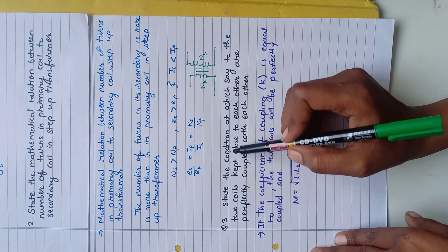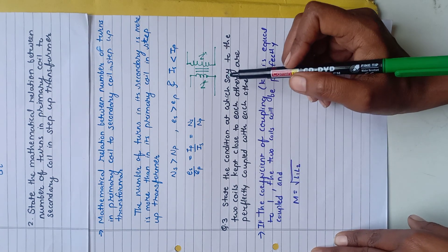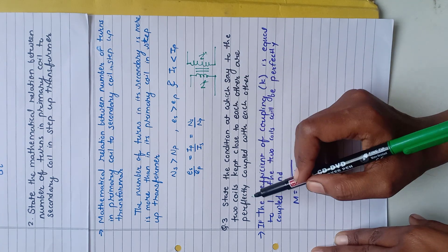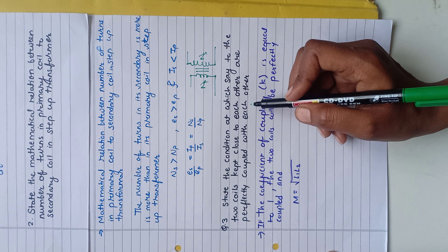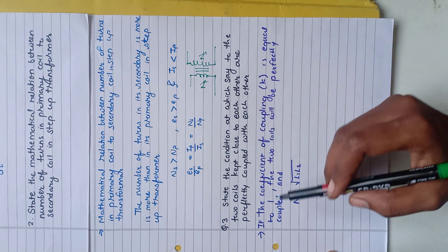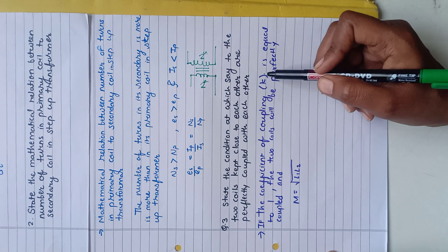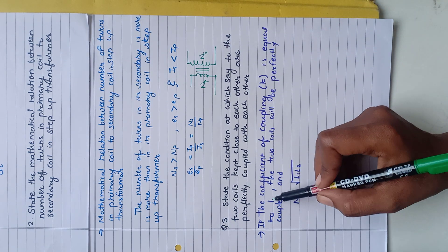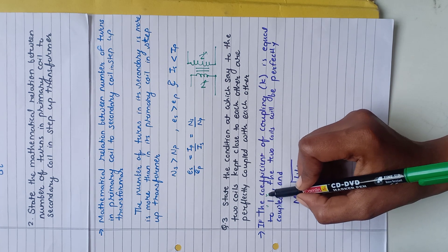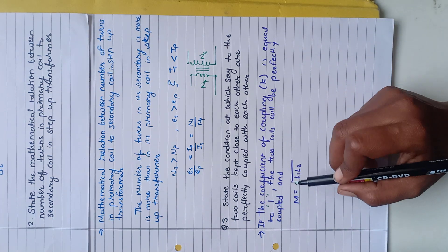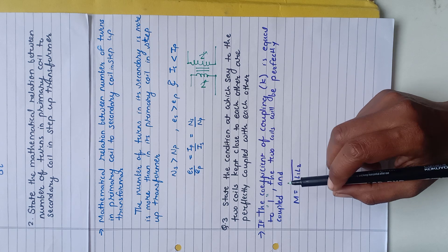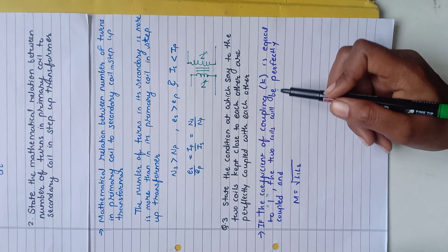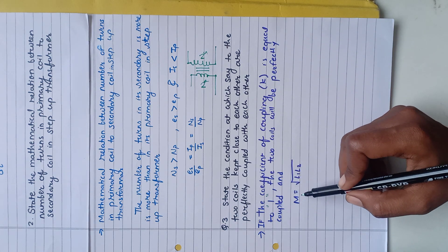The next question: state the condition at which we say two coils kept close to each other are perfectly coupled. The condition is: if the coefficient of coupling, denoted by k, is equal to 1, the two coils will be perfectly coupled. When k equals 1, mutual inductance is given by the square root of L1 times L2.